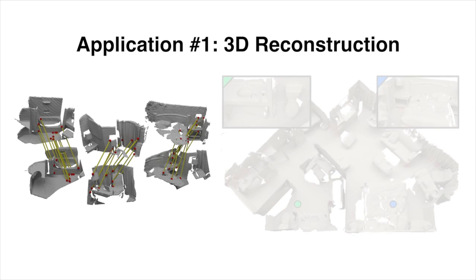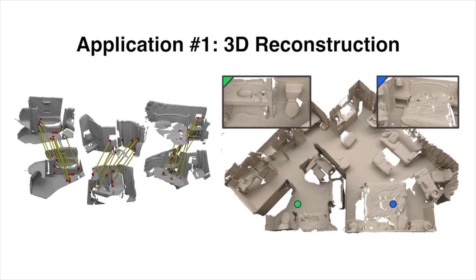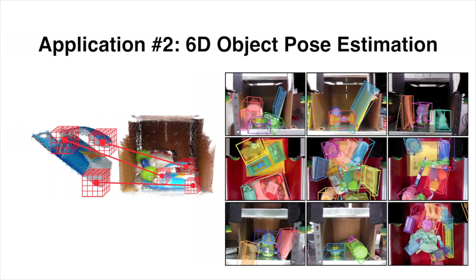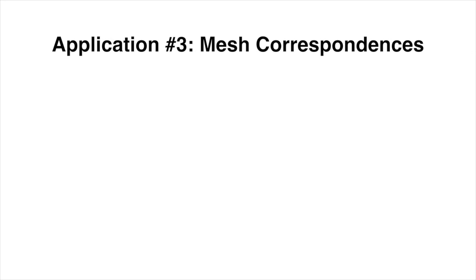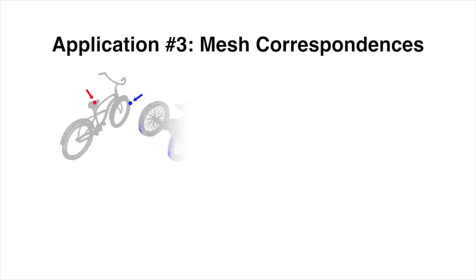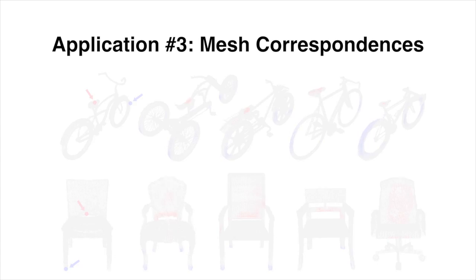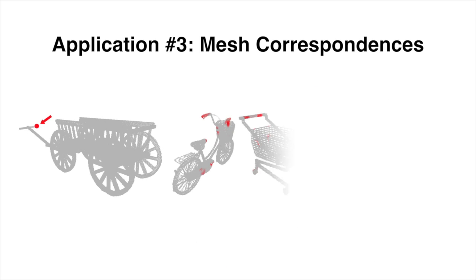In the end, we can produce high quality 3D reconstruction results. In the second application, we show that 3DMatch can be used to perform object model alignment for 6D pose estimation. We visualize the bounding boxes of predicted object poses in the shelf and tote benchmark. In the third application, we show that 3DMatch can be used to find geometrically similar points on 3D meshes, and we visualize correspondences between different object categories.